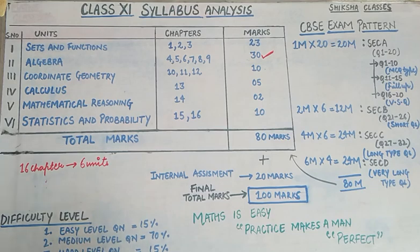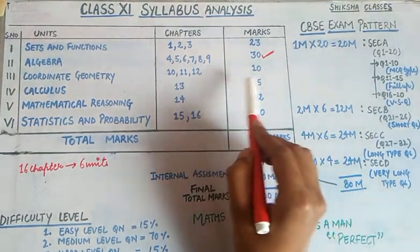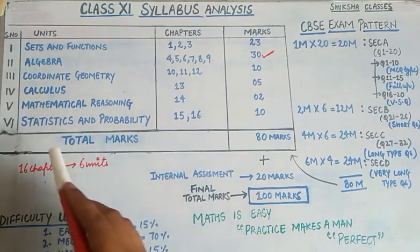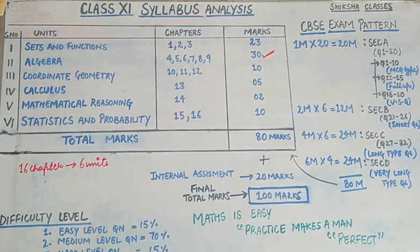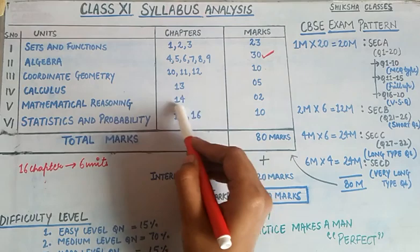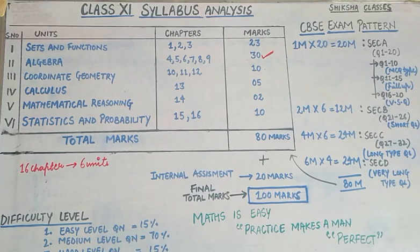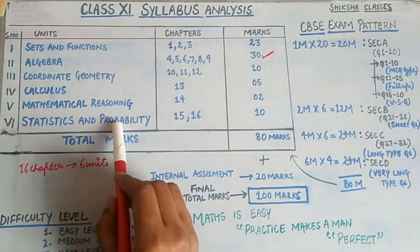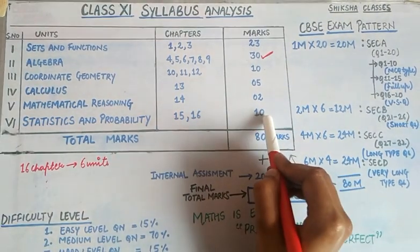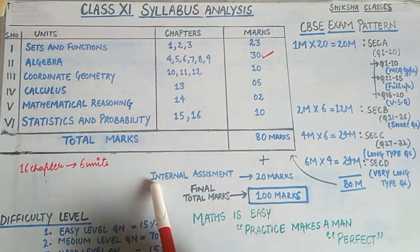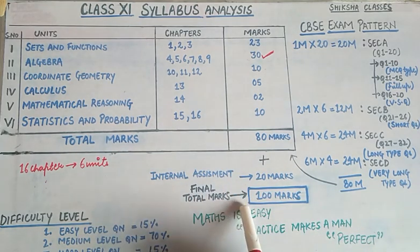In calculus we will learn limits. Next is Mathematical Reasoning — chapter 14 — this unit is not that important; it carries only 2 marks, so it is not a high priority. The 6th unit is Statistics and Probability: chapter 15 is Statistics and chapter 16 is Probability. These together are total 10 marks.